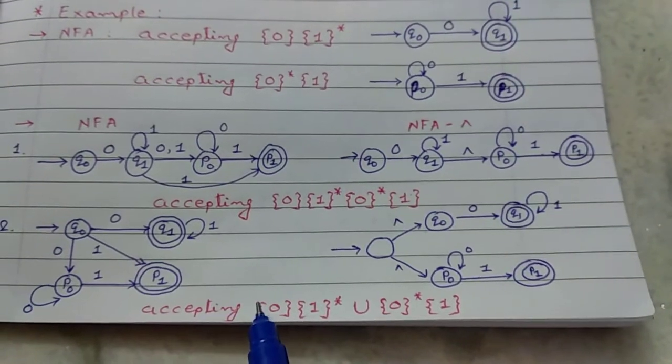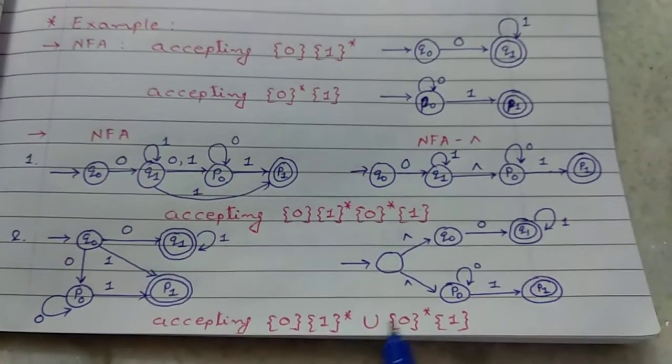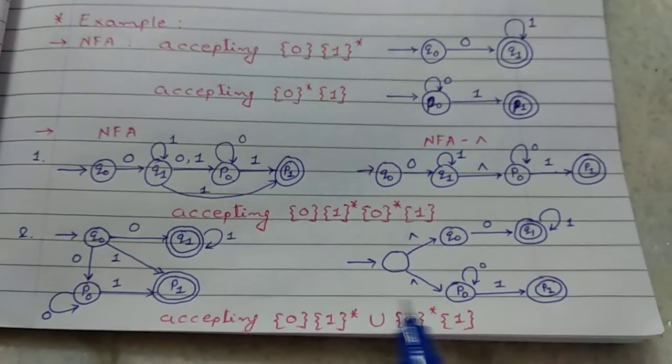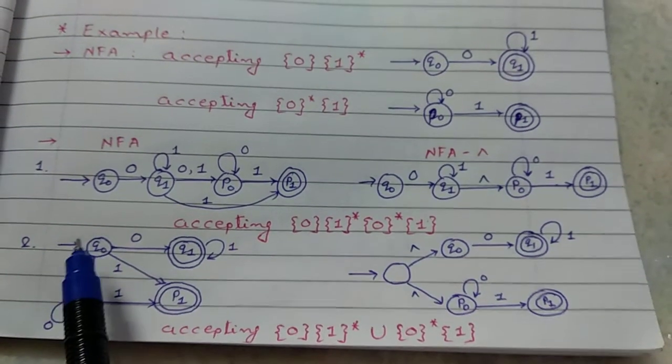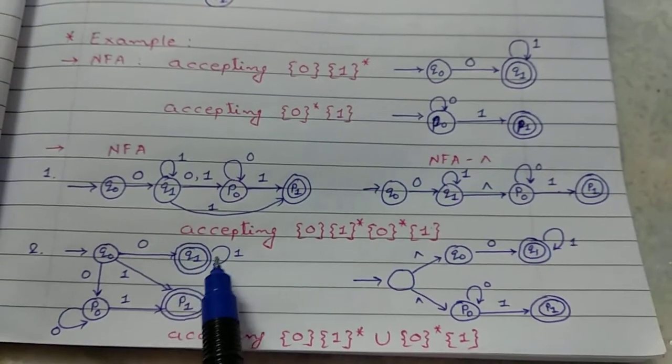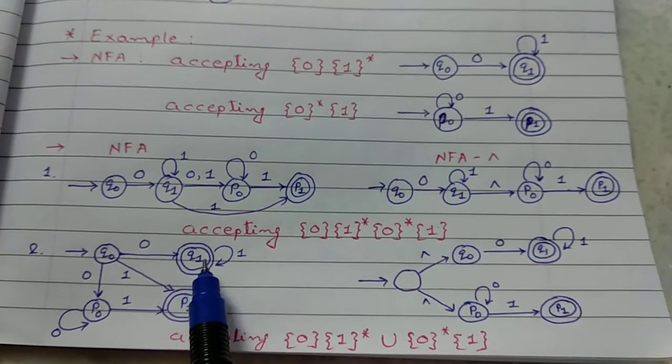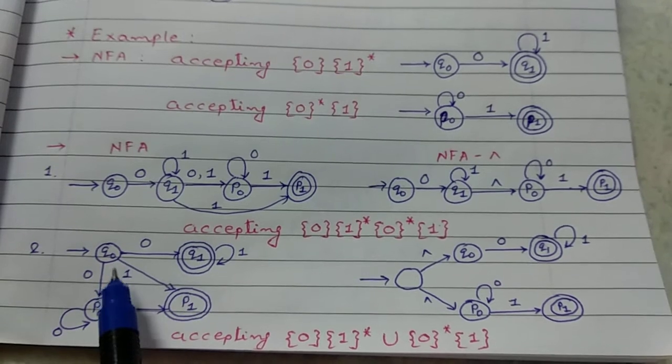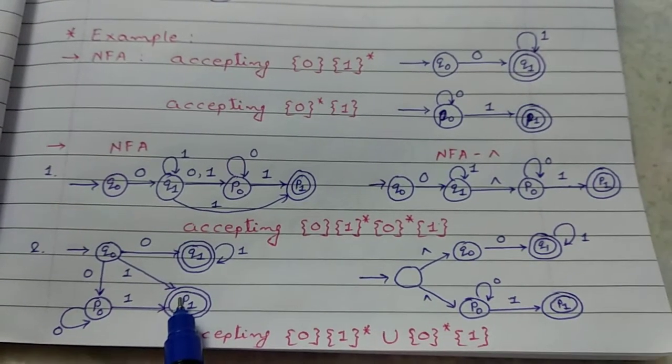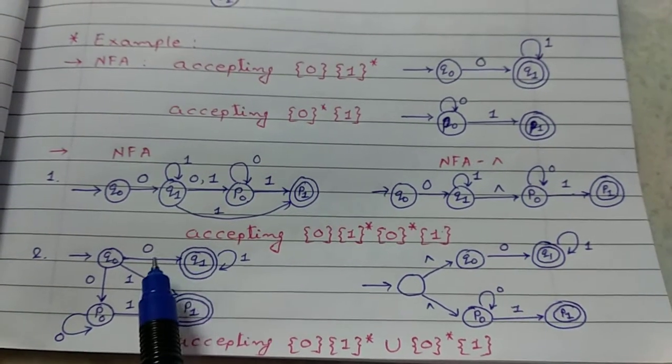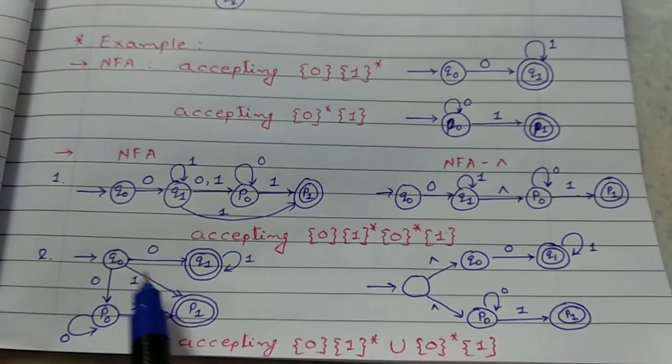Next, accepting 0,1 star union 0 star, 1. For NFA, Q0 to 0, Q1, then 1 star. So, self loop of 1. Union 0 star and 1. If 0,1 star, then after 1, reach at P1.